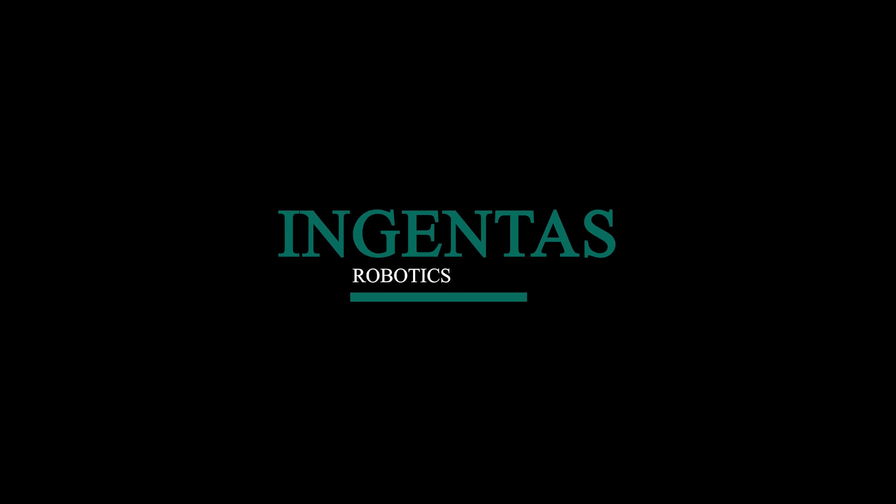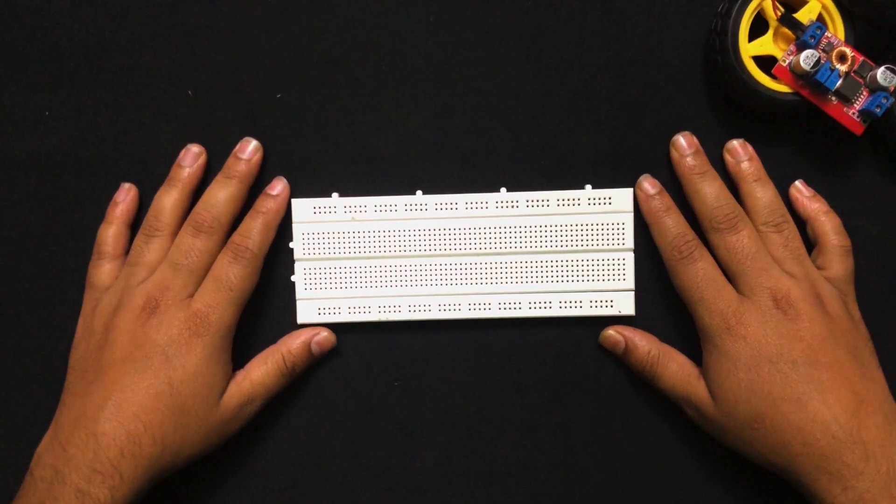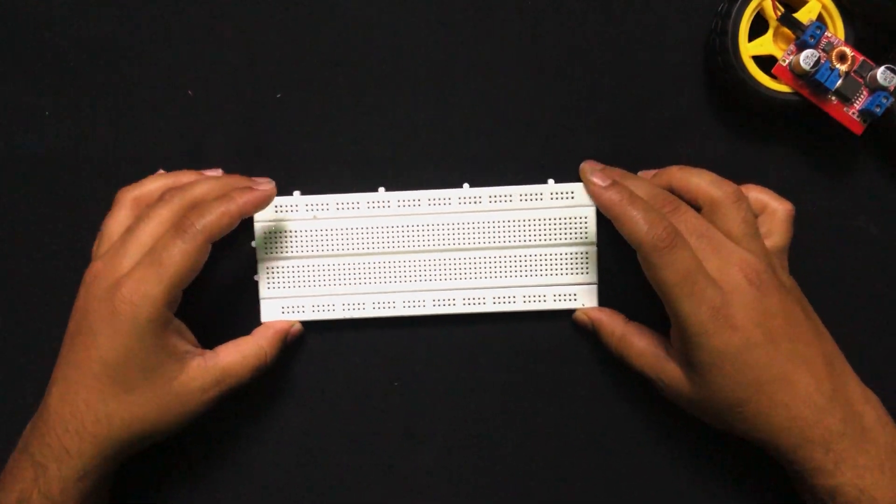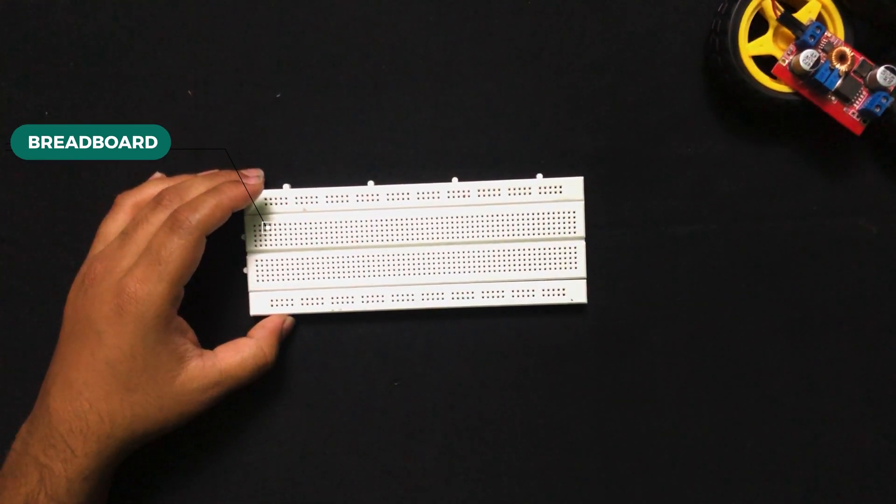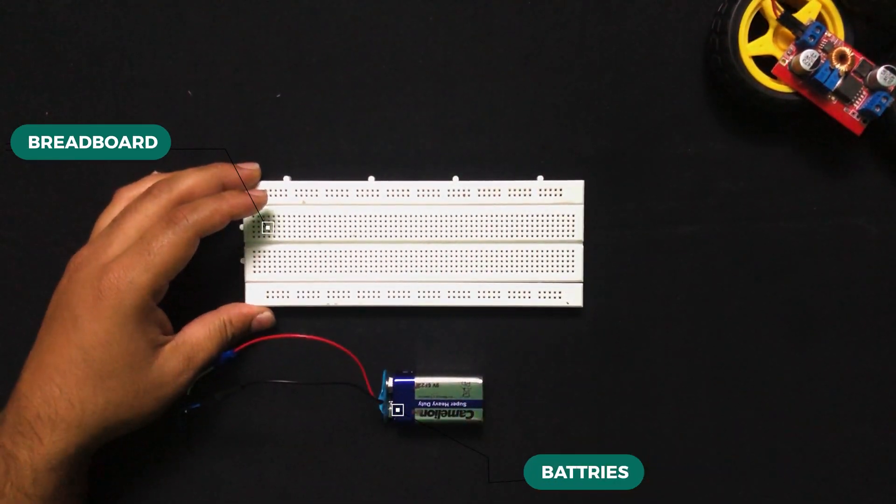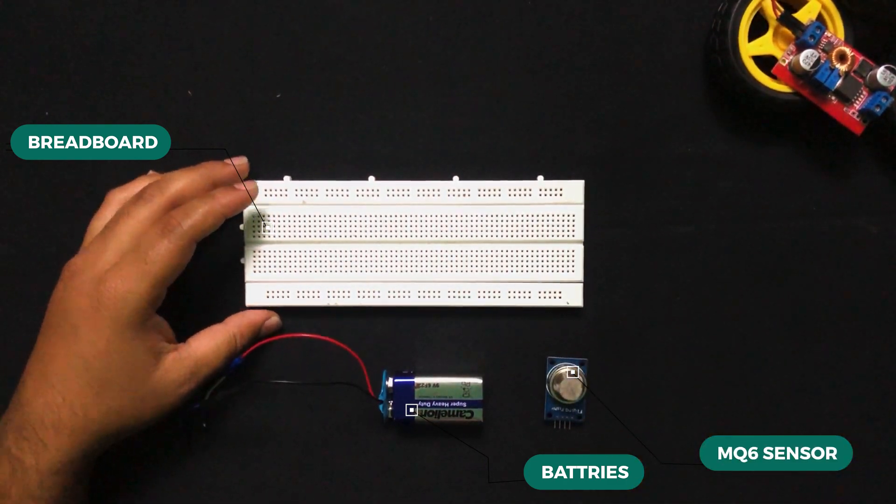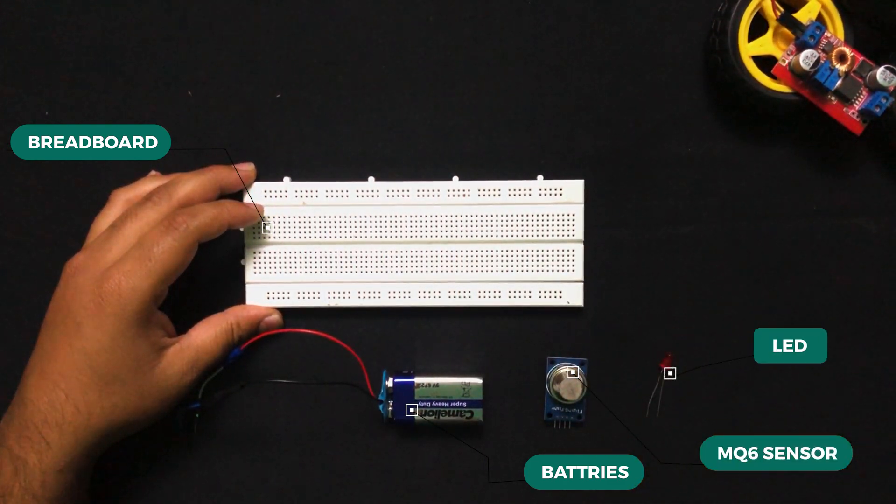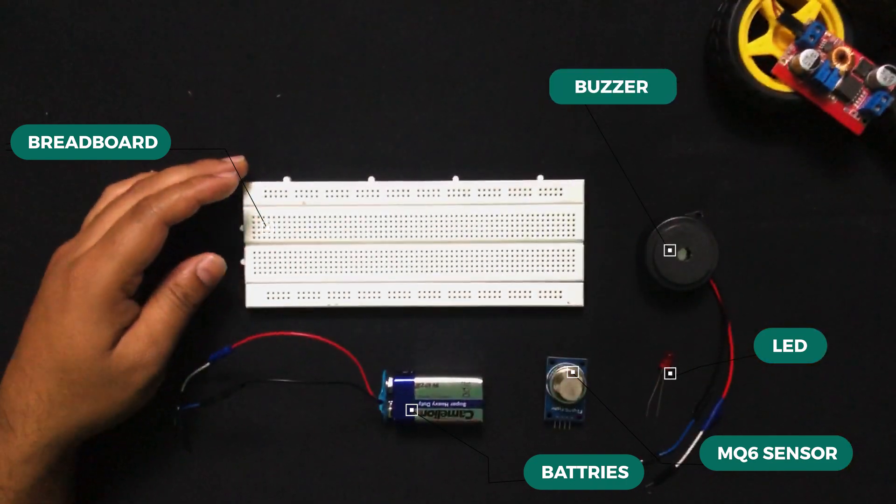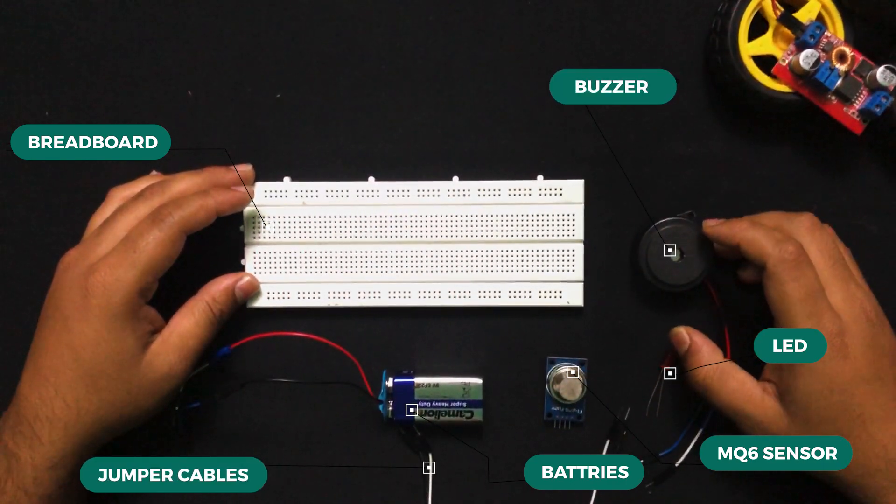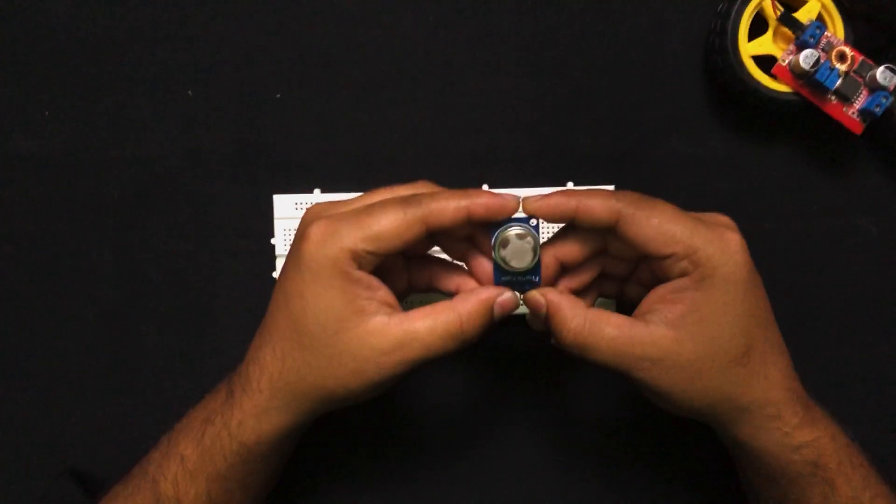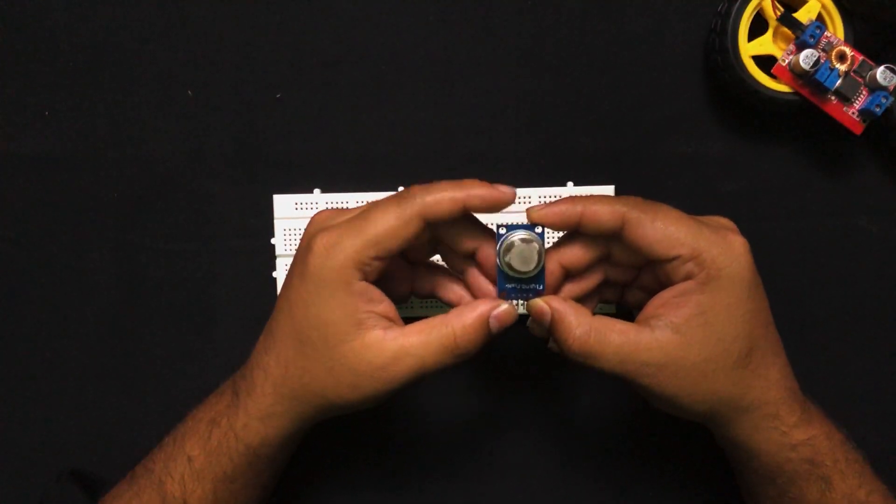For this video we're going to need a breadboard, a 9 volt battery, an MQ6 smoke sensor, an LED, a buzzer, and some male-to-male jumper wires.